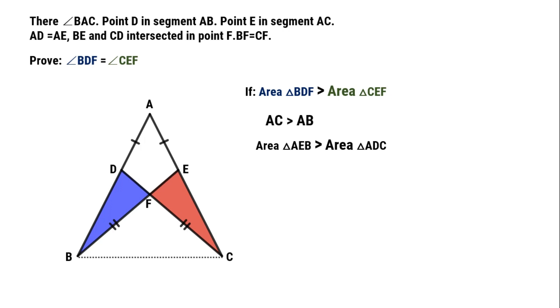By sine rules, we can get, one half times AE, times AB, times sine angle A, greater than, one half times AD, times AC, times sine angle A.